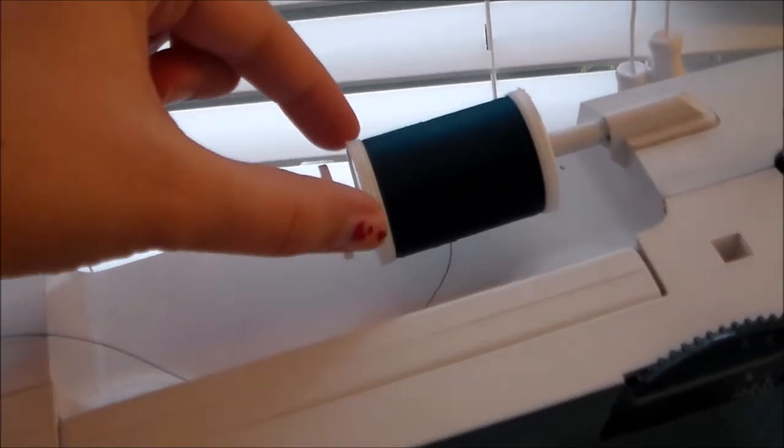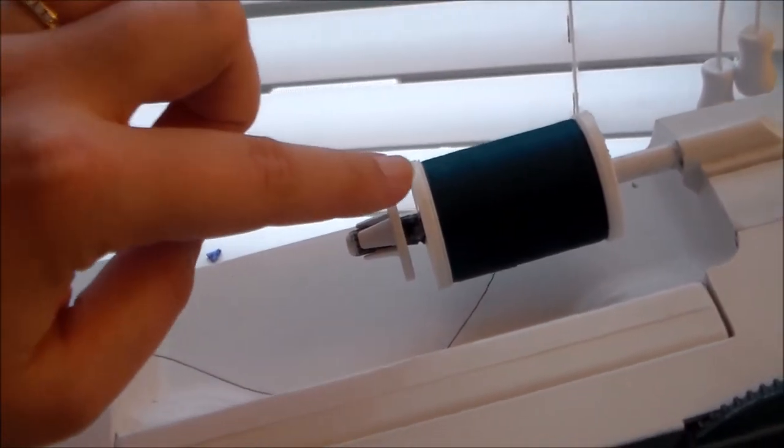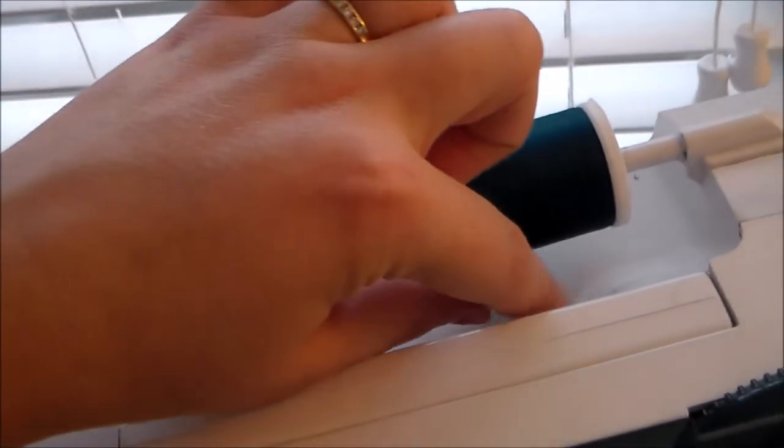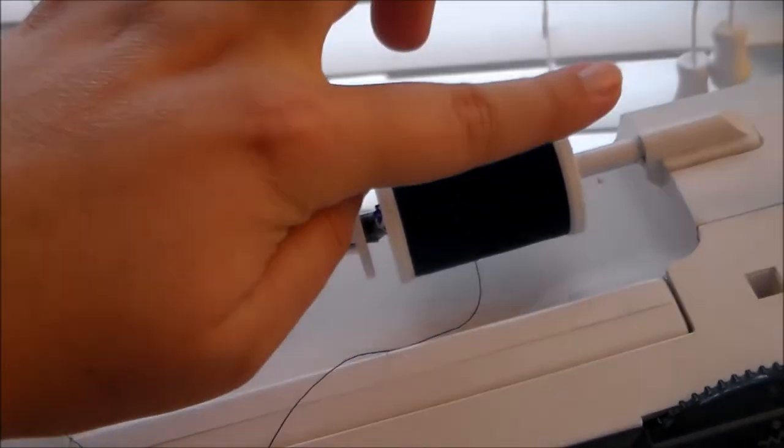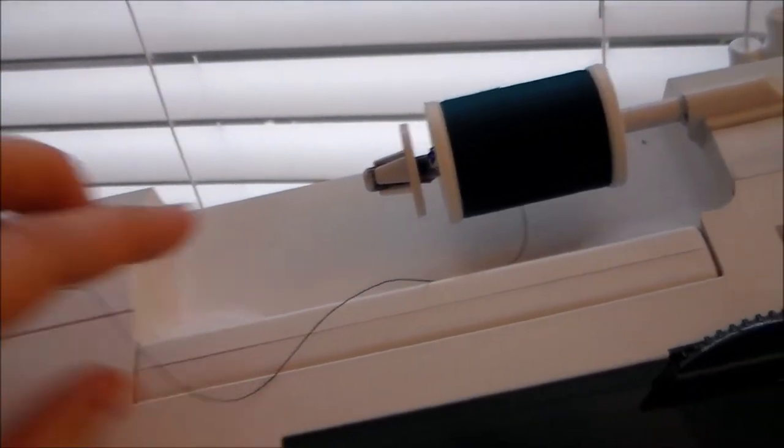When you're putting your spool of thread on, you want to pay attention if there are any notches or any irregularities in the plastic that could potentially catch the thread. So if there is a notch, you want it to be on the back portion of the spool.